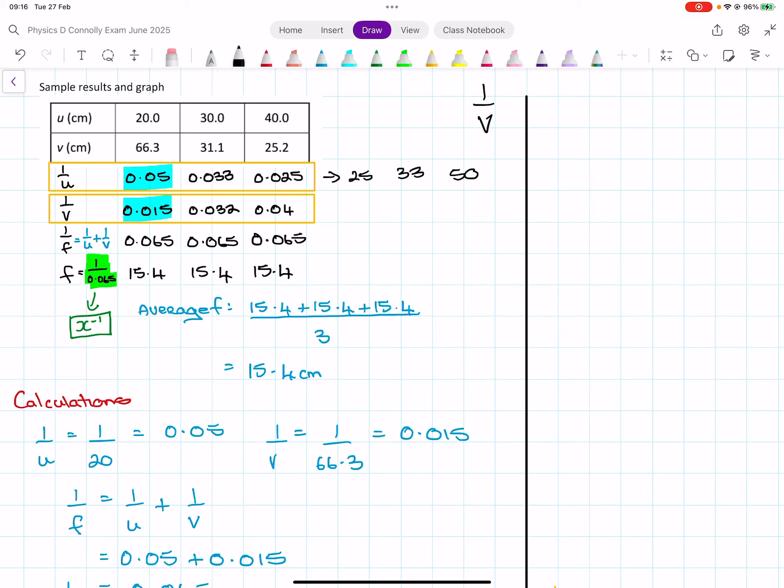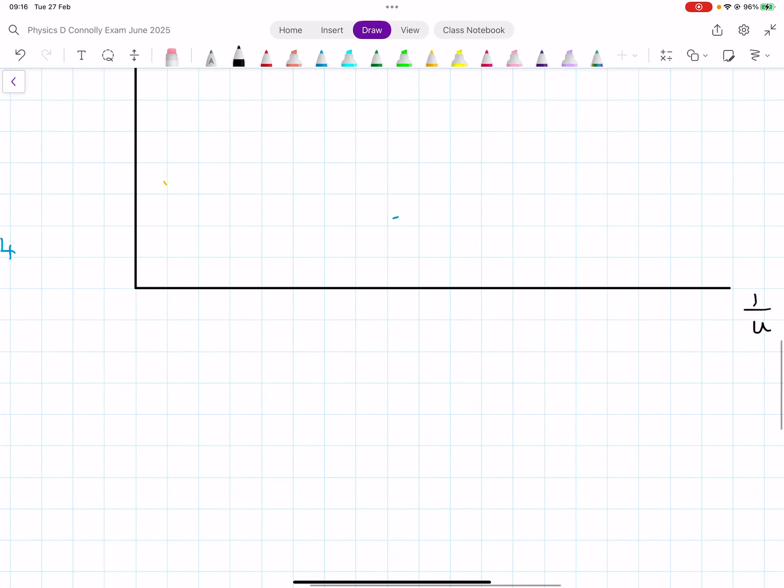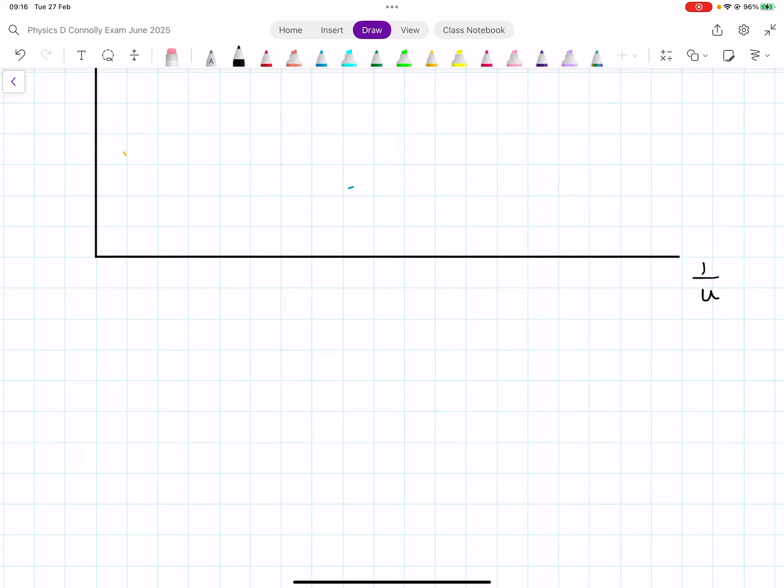We need to pick a scale that will work. I could just do 0.01 and give myself a bit of space. We'll go two boxes, so we make this 0.01, this 0.02, this 0.03, this 0.04, and then this is 0.05.